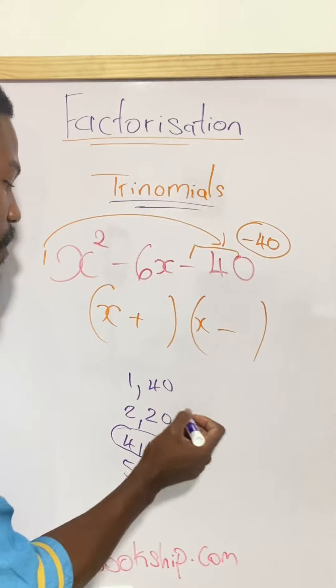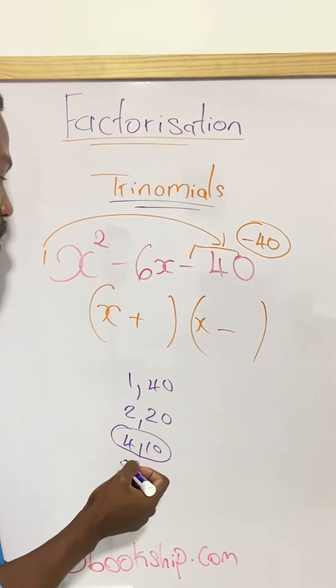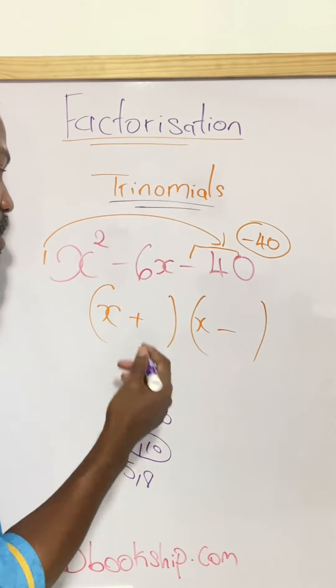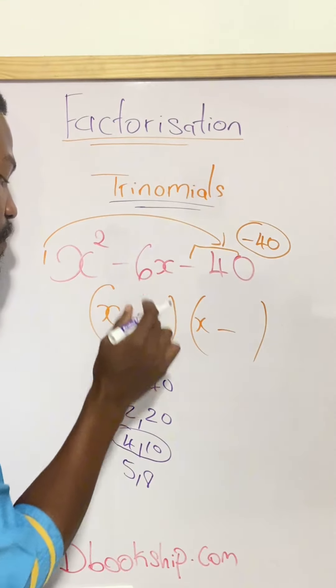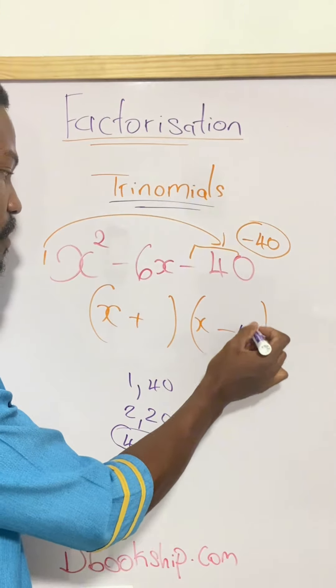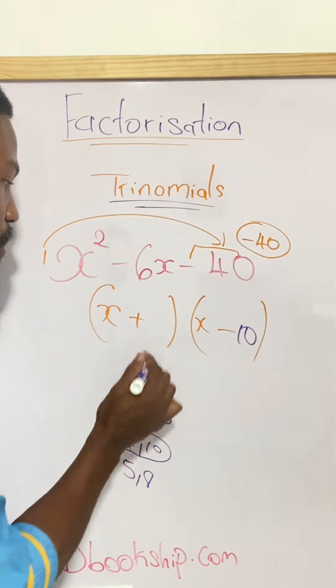So we have to have one being positive and one being negative. If I have positive 10 minus 4, that's going to give me a positive 6. So therefore, I would have to use the bigger one, which is 10, to be the negative, and the positive will be my 4.